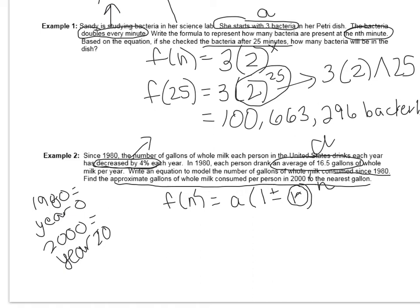If you forget how to change a percent to a decimal, go to your calculator, take the number in front of the percent sign, divide it by 100, because percent means out of 100. 4 divided by 100 is 0.04. So that's what we're going to plug in for R. So F of N is equal to 16.5, because that's how many gallons each person drank to start with in year 0. And this time it's a decrease, so we're going to do 1 minus 0.04 raised to the N power. And we end up with F of N equals 16.5 times 0.96 to the N power.